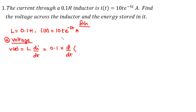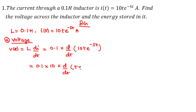The current through the inductor is 10·t·e^(−5t). Since 10 is a constant, we can pull it out, giving us 0.1 × 10 × d/dt of [t·e^(−5t)]. Multiplying 0.1 by 10 gives 1, so we now need to find the derivative of t·e^(−5t).